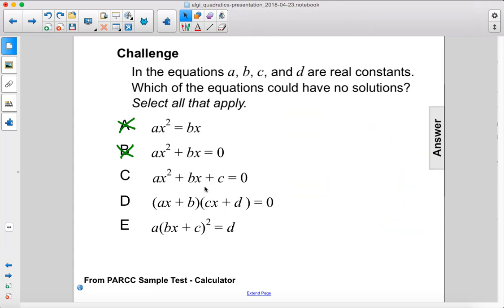Alright, next we'll move on to c. Well, c is just the standard form. Therefore, if the discriminant, the b squared minus 4ac, if that happened to be less than 0, then we would have no solutions here. So c is one of the answers.